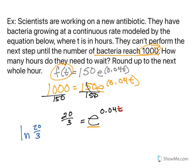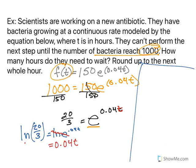So the natural log of 20 over 3 equals the natural log of e to the 0.04t. We know by that identity property that the natural log of e will just kind of disappear, and we're left with 0.04t equals the natural log of 20 over 3. Our final step to isolate t is to divide both sides by 0.04.